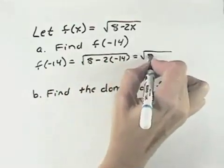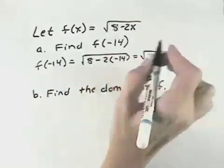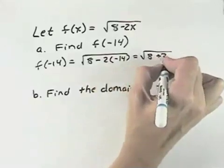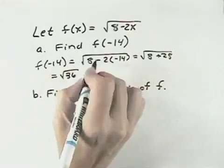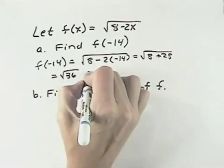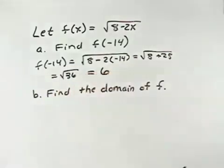That gives us the square root of 8, and then minus a negative, 2 times negative 14 becomes plus 28. When we combine those together, we get the square root of 36, and if we take just the primary square root of 36, that would be 6, a positive 6.